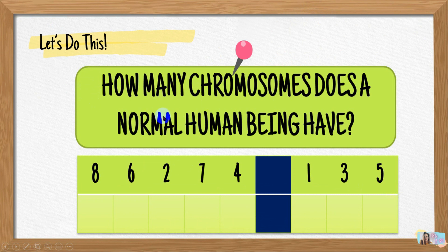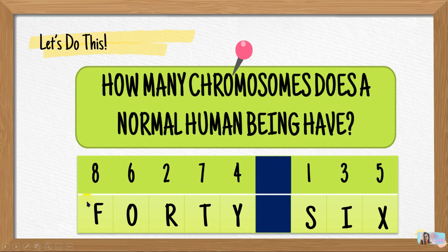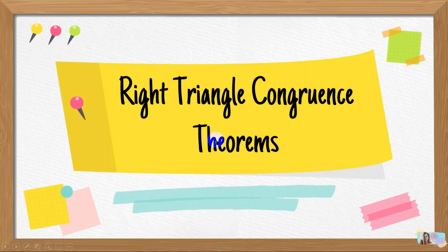The answer to the question — how many chromosomes does a normal human being have? — is 46 chromosomes. I hope it's now clear what the different right triangle congruence theorems are. We need to be familiar with the parts of the right triangle so we can name the congruence theorem applicable to the corresponding congruent parts. The four theorems are: HYA (hypotenuse and acute angle), LA (leg and acute angle), LL (leg-leg), and HYL (hypotenuse-leg).